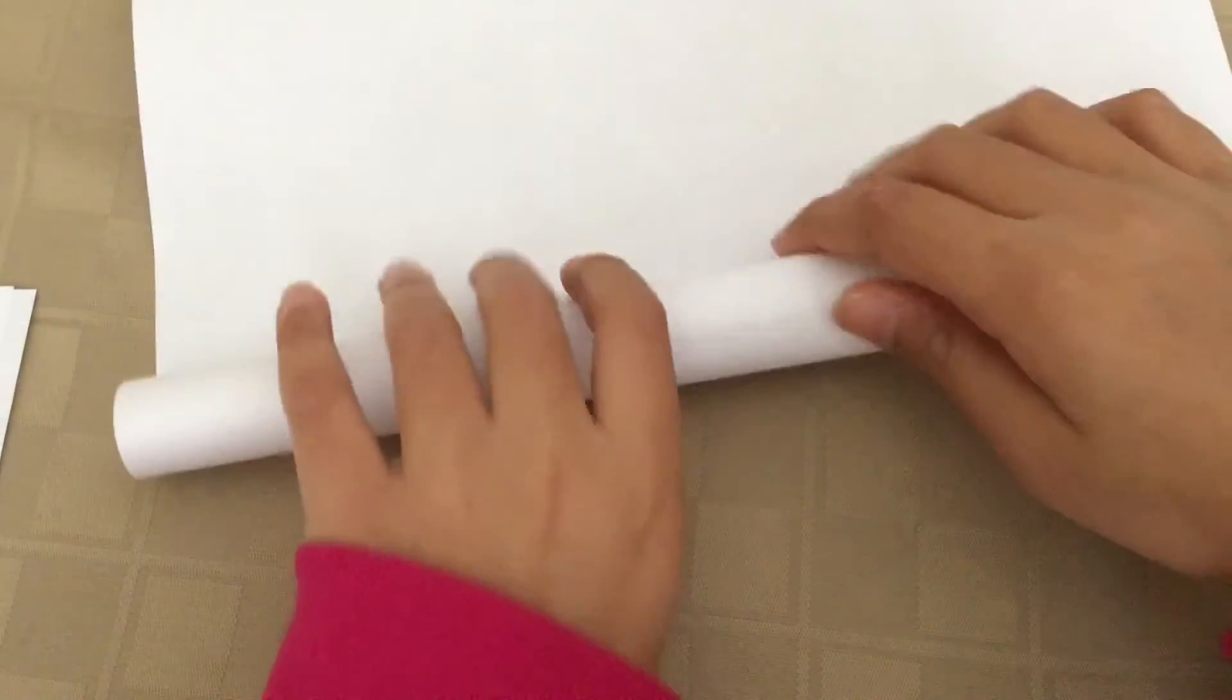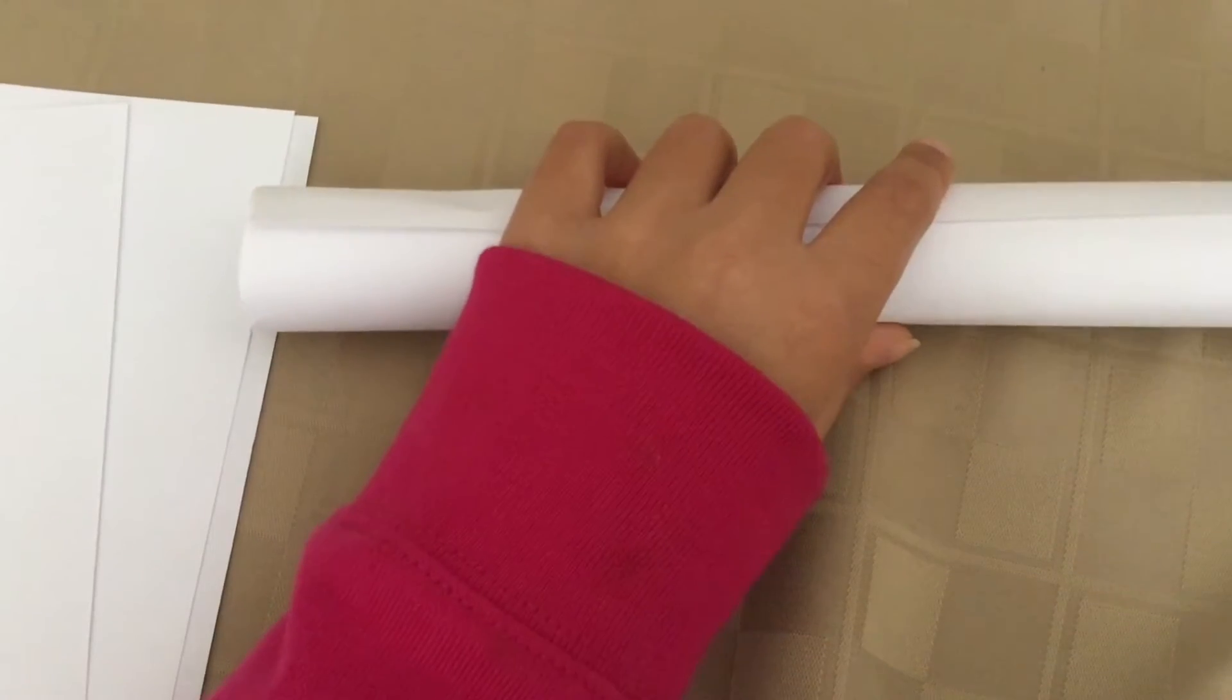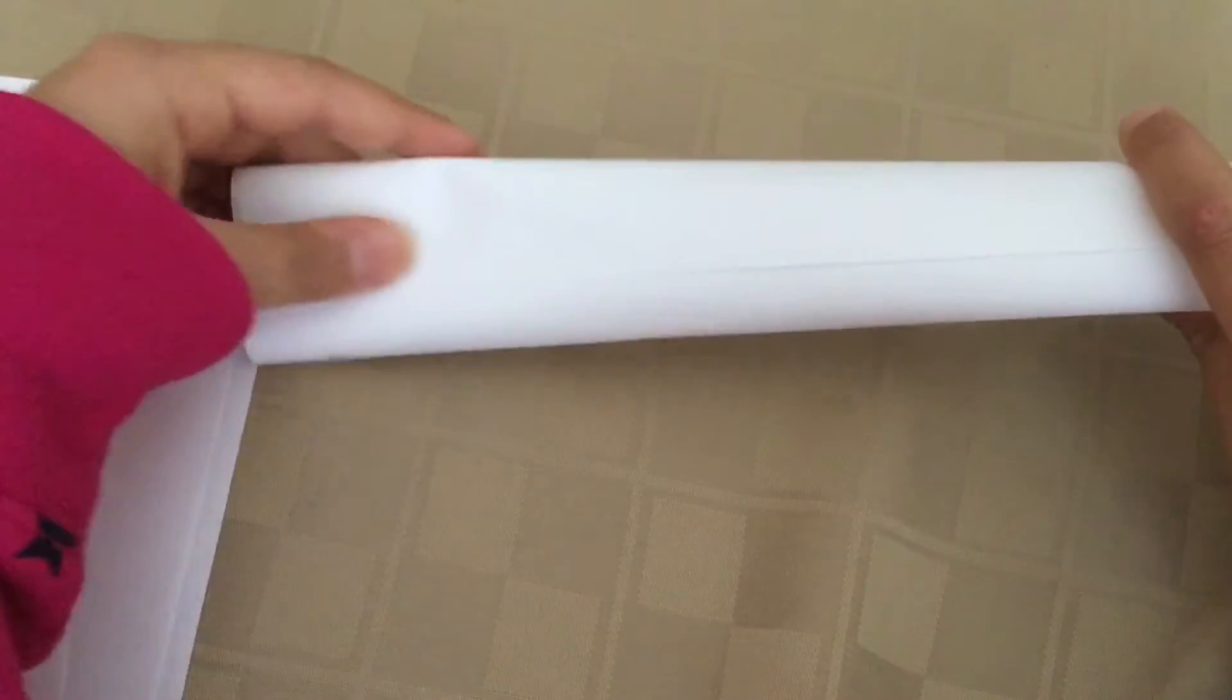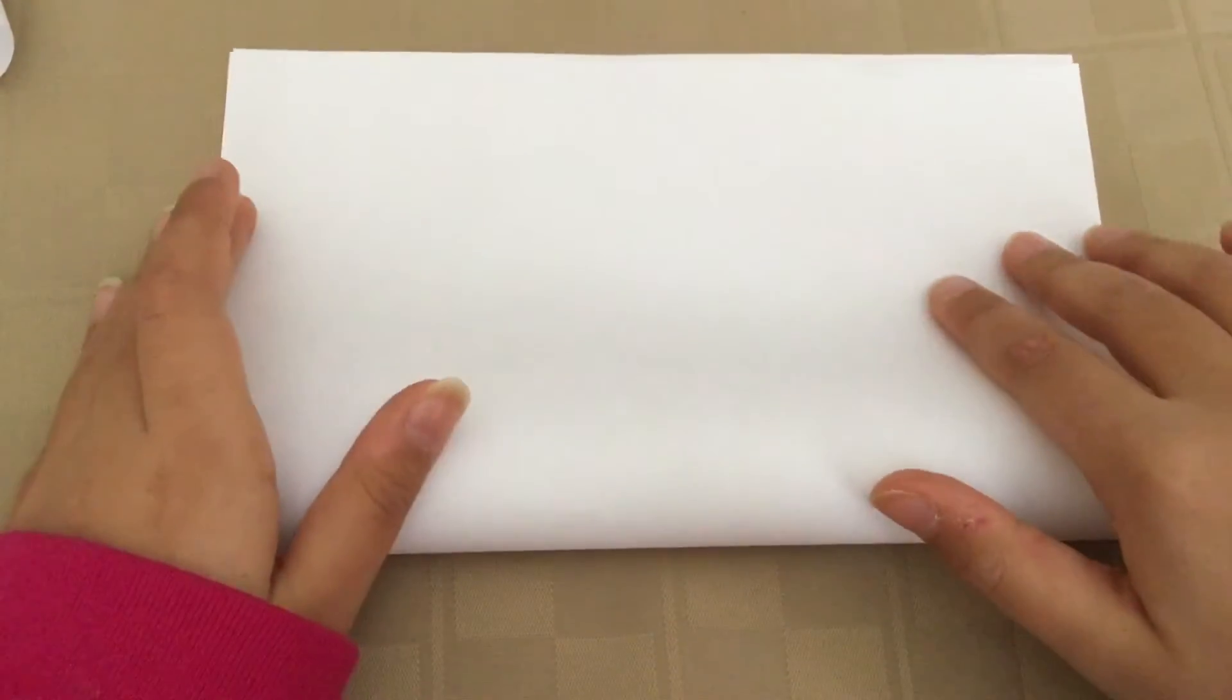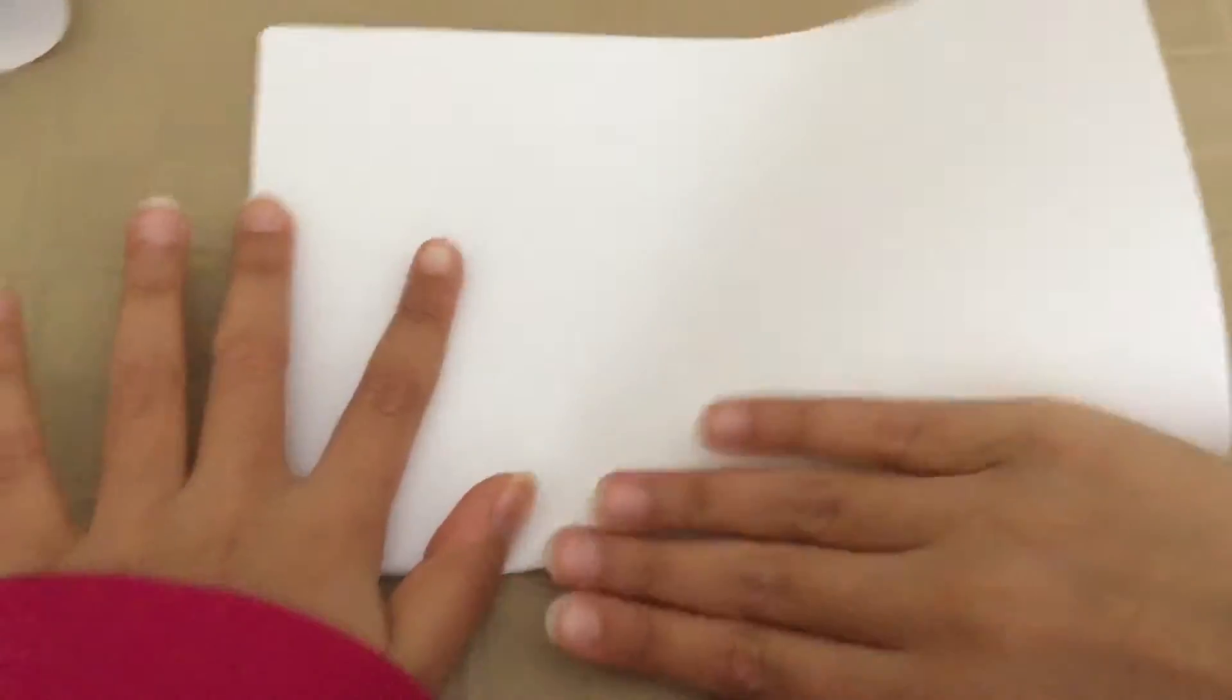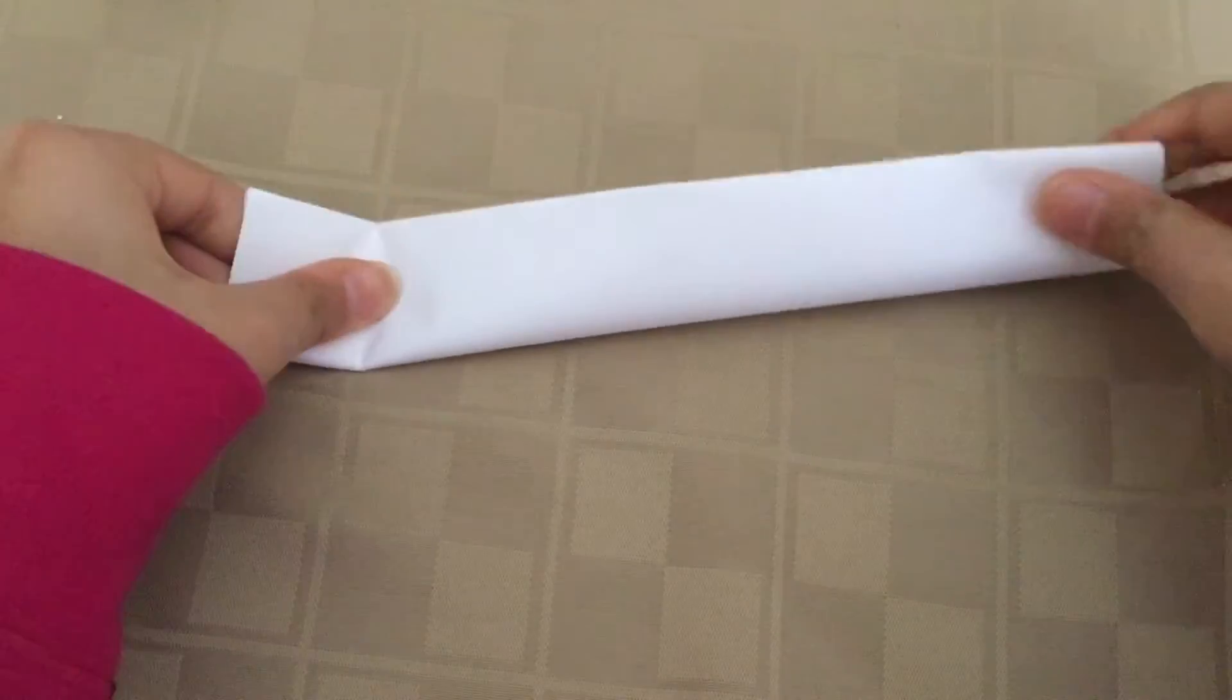Don't make it too small, make it medium, sort of big. Okay, so now that I have this and have glued it—sorry about that, I actually dropped it—once you have this, you're going to put this off to the side. Get your other sheet of paper and you're going to fold it in half.